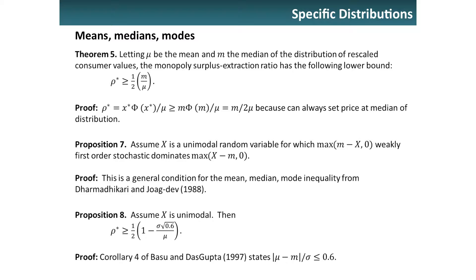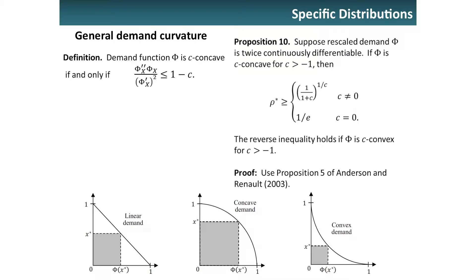We can also have results on general demand curvature using results from Anderson and Renault. Once you get the early machinery, you can use a lot of these existing results to say a lot.